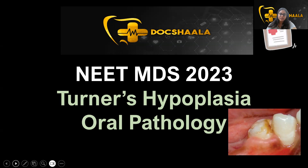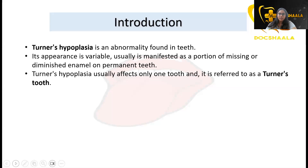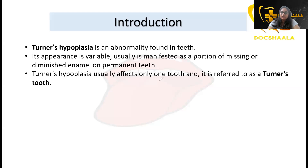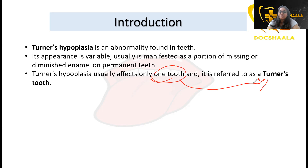Turner's hypoplasia is an abnormality found in teeth. Its appearance is variable, but mostly it appears as a brownish sharp pigment on the tooth — a portion of missing or diminished enamel on permanent teeth. Turner's hypoplasia usually affects only a single tooth of the dentition, and that tooth alone is known as Turner's tooth.